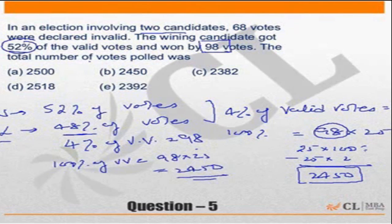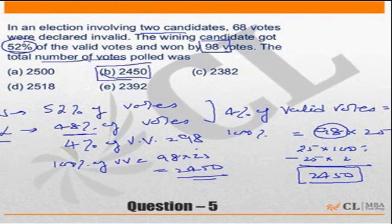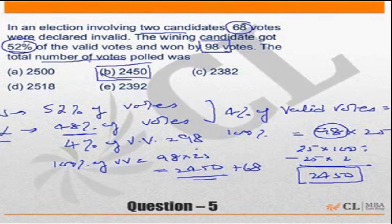Now, this is where the check happens. Many students would mark 2450 as the answer, which is incorrect. The question is not asking for the total number of valid votes — it is asking for the total number of votes. The total number of votes is 2450 plus 68 invalid votes, so the answer is 2518.